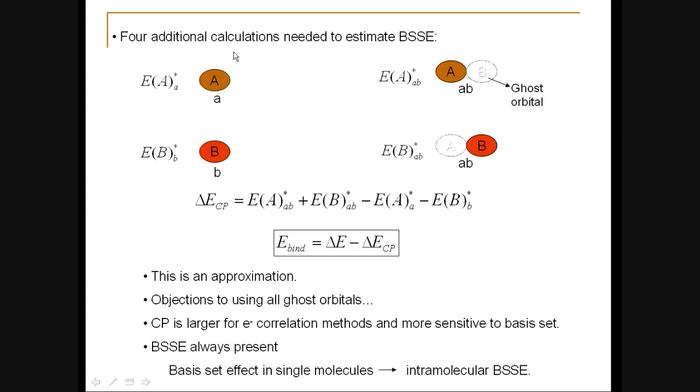To see what the difference between the case where A is using the functions on B and the case where it's not using the functions on B, we have to do the following calculations. First, we take molecule A or fragment A, whatever you like to call it, and we use the original basis set that was on it.